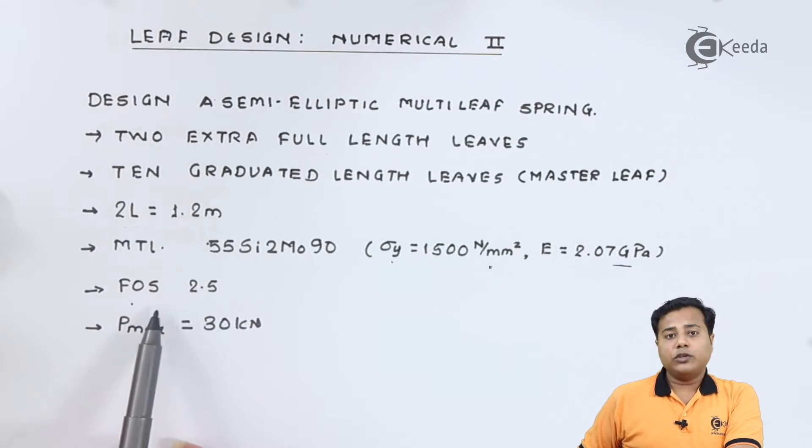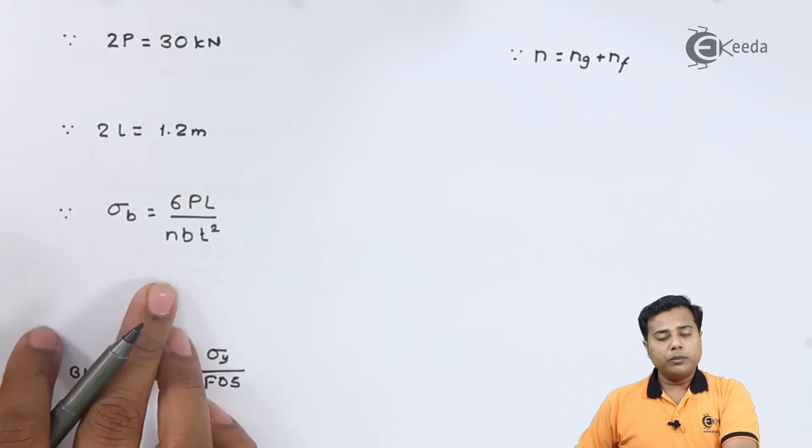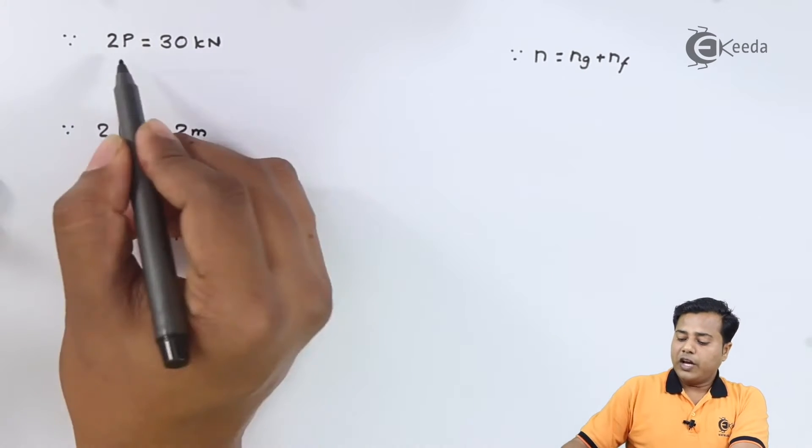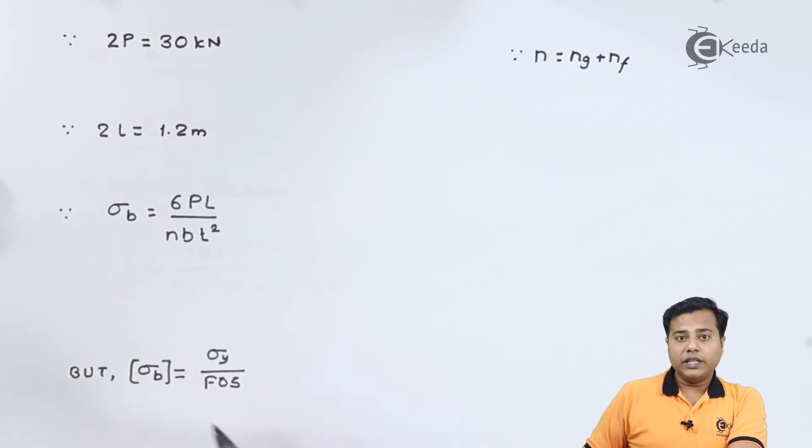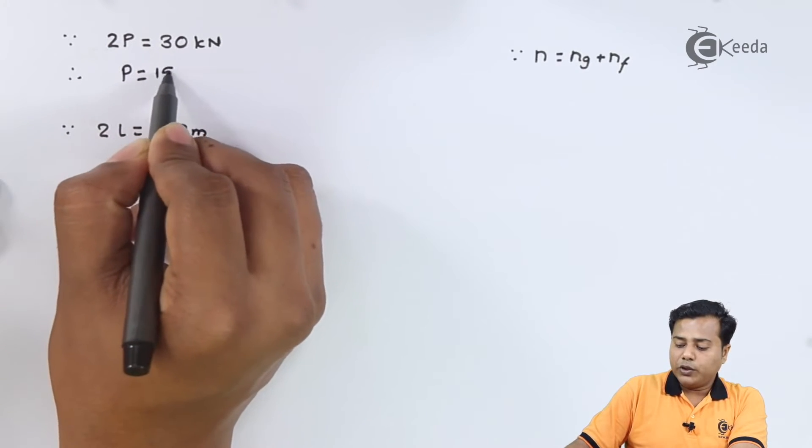Factor of safety is also specified in this particular example which is 2.5 and the maximum amount of force that is going to act on the given spring mechanism is 30 kilonewton. The problem statement in our case is quite simple. We have been given P equals 30 kilonewton and therefore P becomes 15 kilonewton.